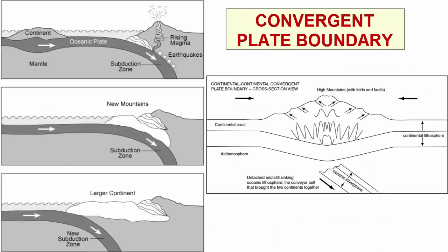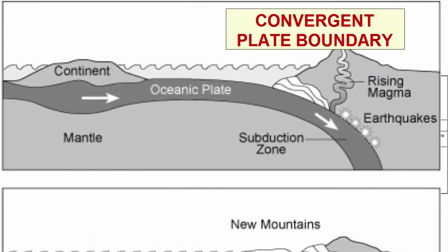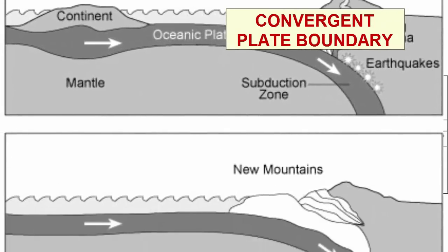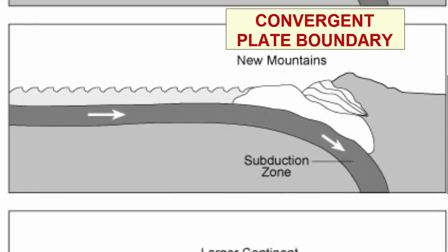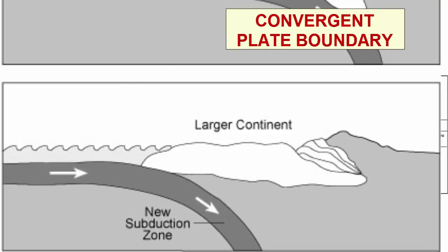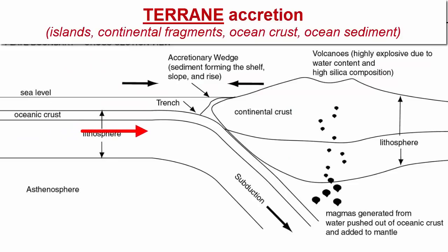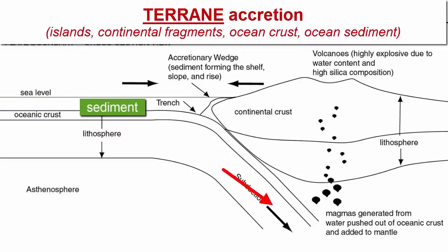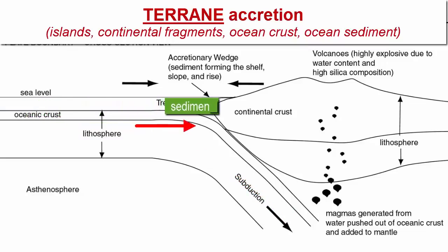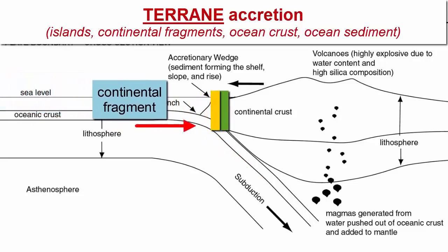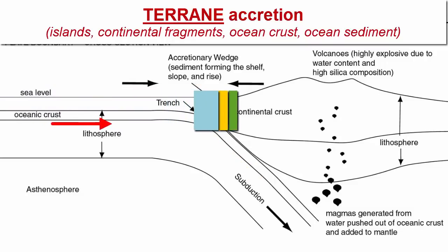Convergent plate boundaries can also exist between two continents when the ocean that existed between them entirely subducts and the two collide and accrete together to form a larger continent. Just as divergence is the method for breaking up continents, convergence is the method for conjoining them. Even as ocean floor subducts alongside a continent, accretion and continental growth is happening—islands, continental fragments, sediment, and the crust that carries them can get scraped off and accreted to the edges of the continent. We call these accreted fragments terrains, and they are the basic building blocks of all continents.